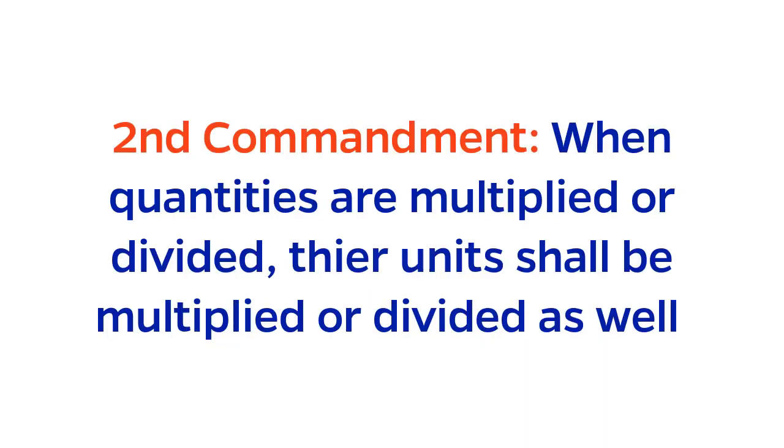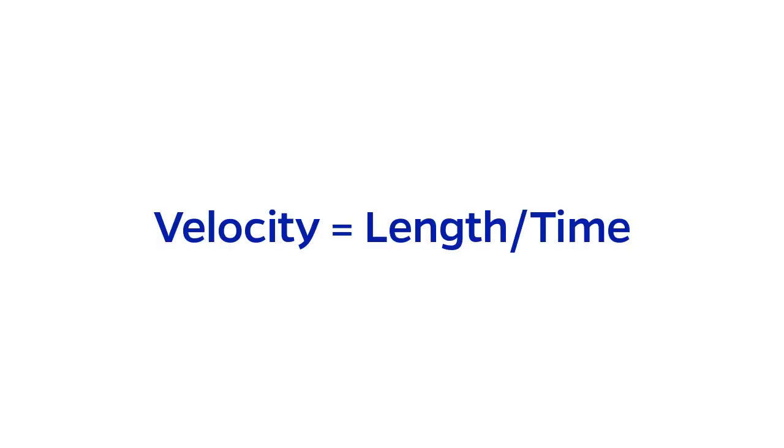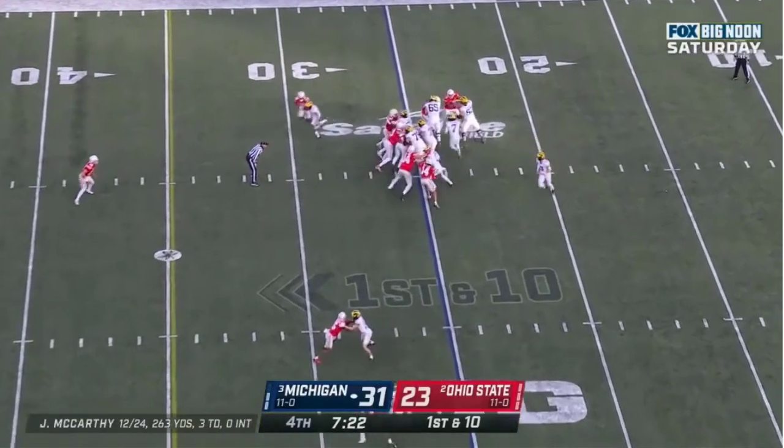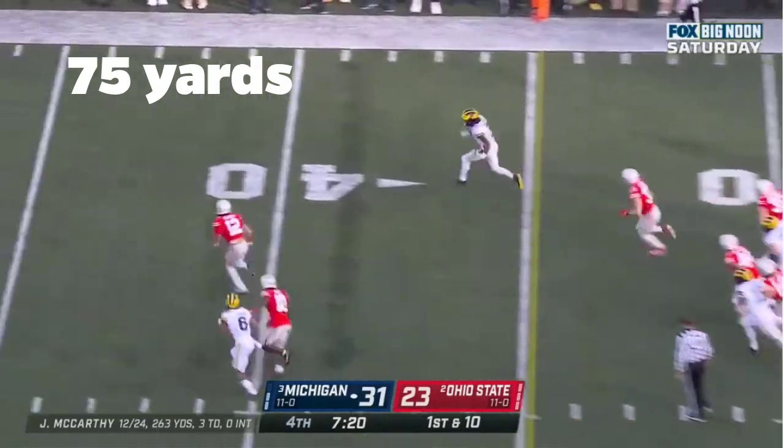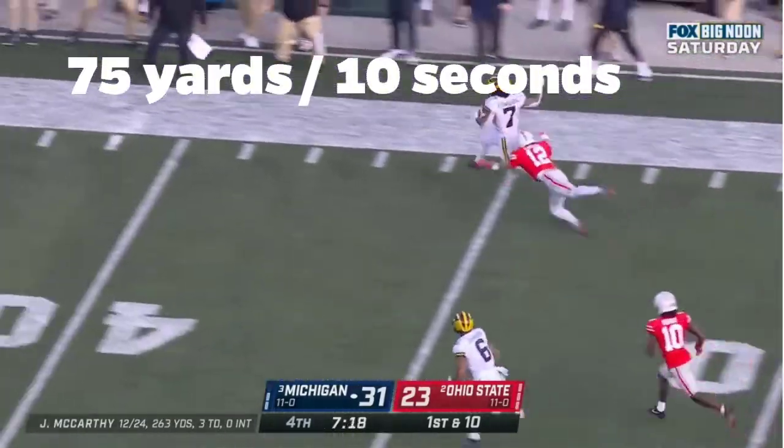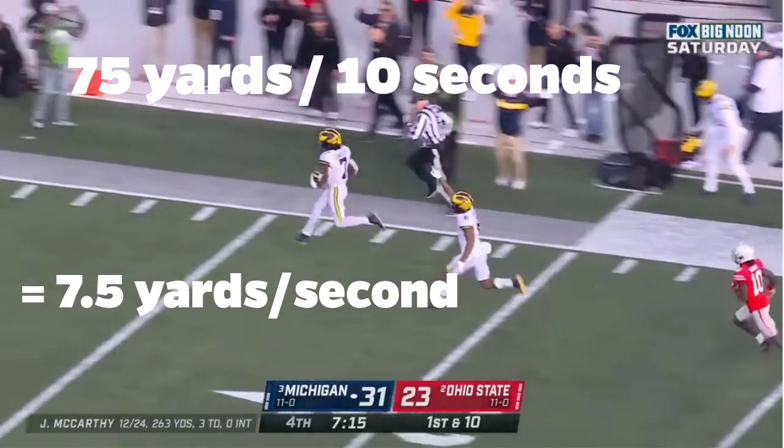The second commandment: When quantities are multiplied or divided, their units shall be multiplied or divided as well. For example, this is how we can calculate a velocity given a length and a time. If Michigan running back Donovan Edwards ran 75 yards in 10 seconds, then his average velocity was 7.5 yards per second.